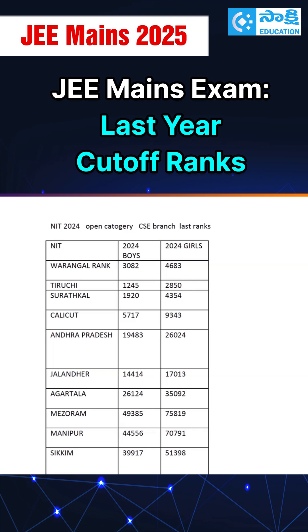For tier one top colleges, if you are an open category student and get a rank below 10,000, you can expect a seat because this year overall 3,000 seats are increased and cutoffs are almost the same as last year. For example, in 2024 at Warangal, the cutoff last rank for boys was 3,082 and for girls 4,680. At Calicut, it was 5,717 for boys and 9,343 for girls. So below 10,000, you will get a tier one NIT college in open category for computer science.